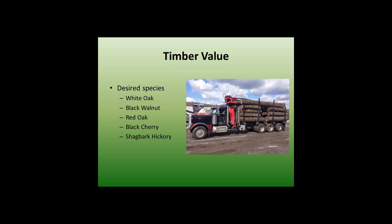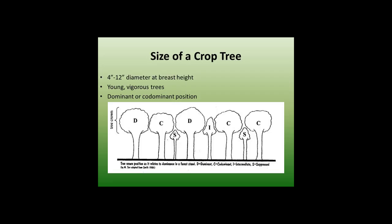One thing I stress to landowners is that diversity is good. When deciding what size crop trees to look for, generally you're looking for trees that are 4 to 12 inches in diameter — young, vigorous trees that are not suppressed and are in a dominant or co-dominant position.